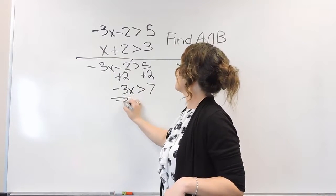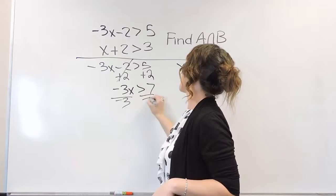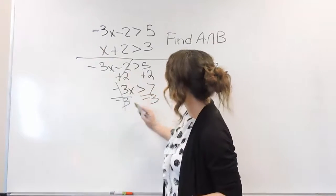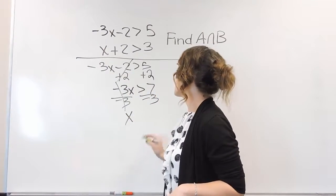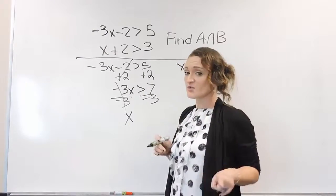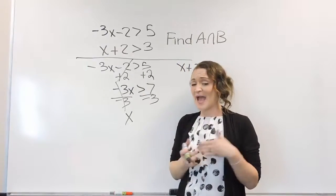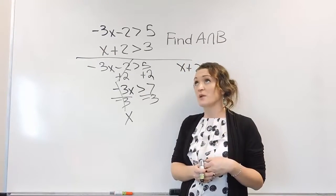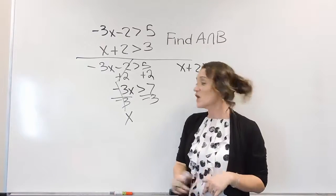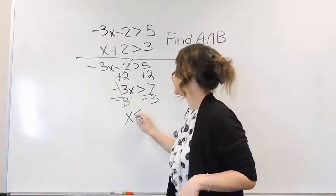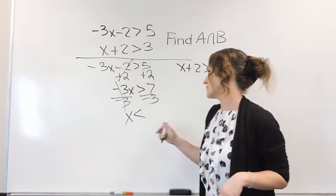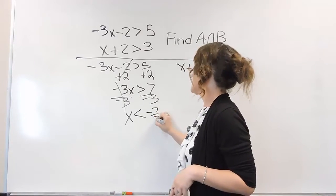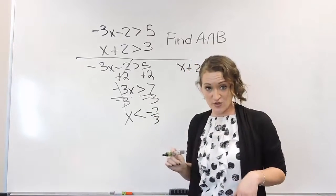Then we're going to divide both sides by negative 3. Negative 3 over negative 3 cancels. Be aware: when you multiply or divide by a negative, you need to flip the inequality symbol. So 7 divided by negative 3 is negative 7 thirds.